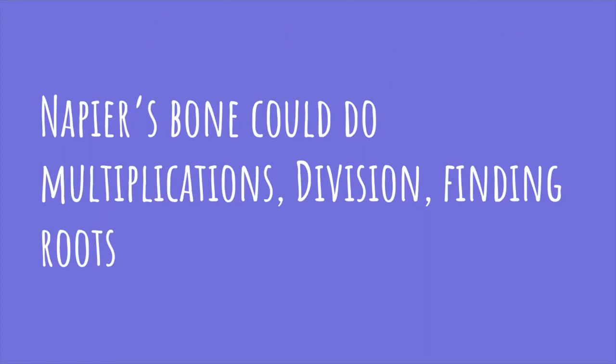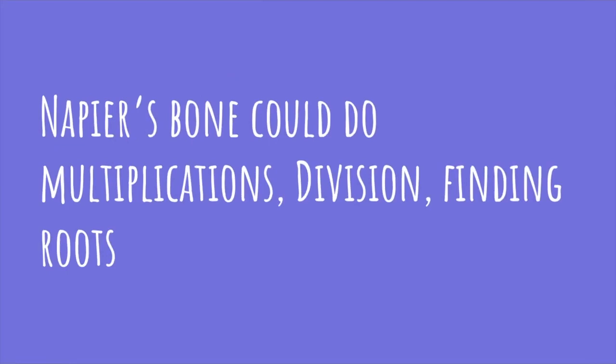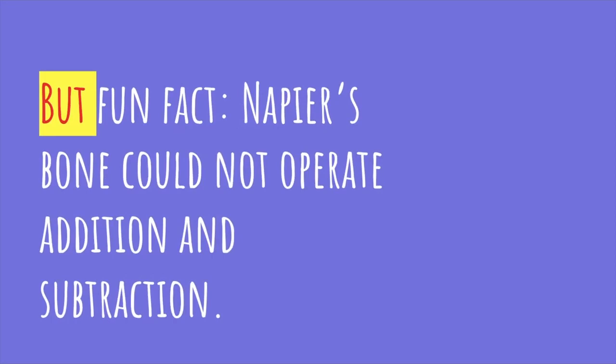Napier bones could do operations like multiplication, division, finding roots, square roots, cube roots. But Napier's bone could not do addition and subtraction. It could multiply, divide and find the square root but could not do the addition and subtraction.